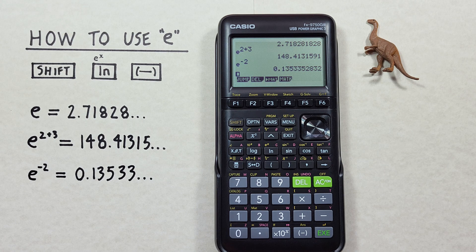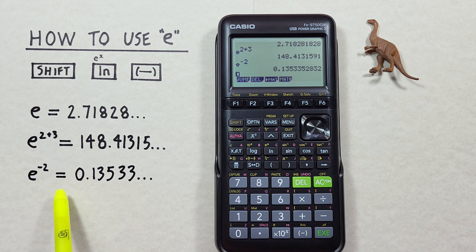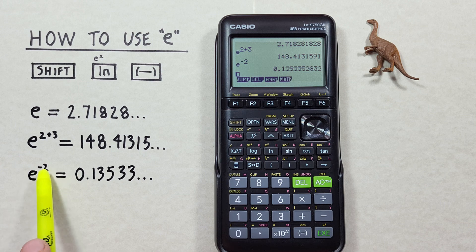One thing to keep in mind is if we're using this as part of a longer equation, like say E to the power of negative 2 plus 1, we need to bring our cursor out of that exponent box to continue the equation.